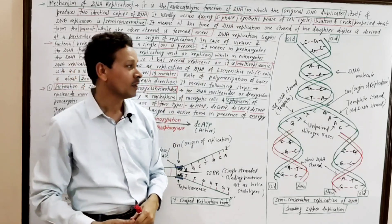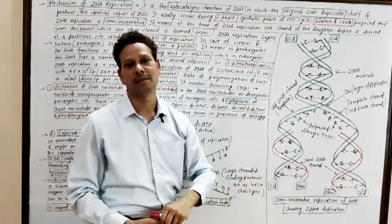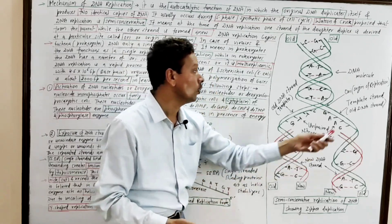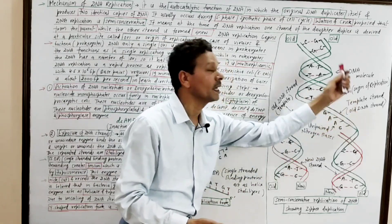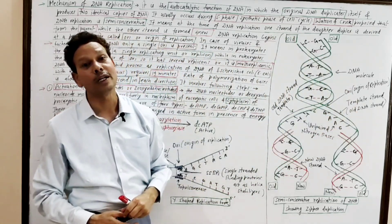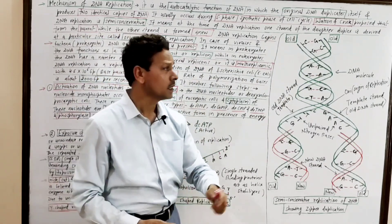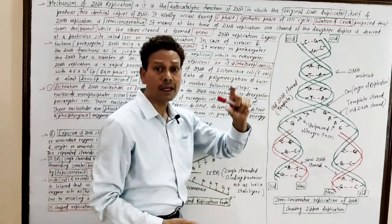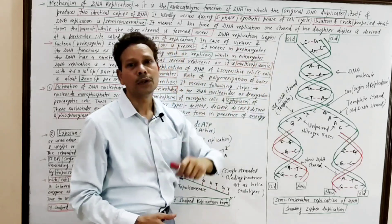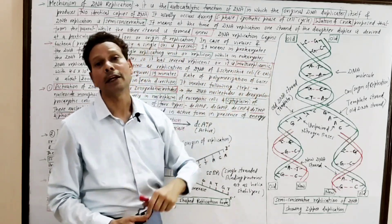In contrast, in the case of eukaryotes, the DNA possesses several ori sites — several origin of replication units are present. This means DNA replication in eukaryotic DNA is multi-repliconic.